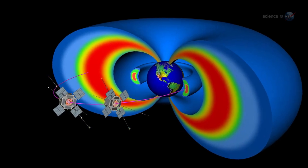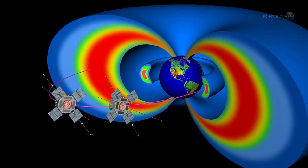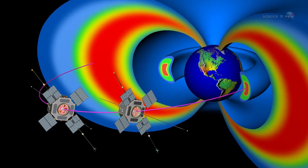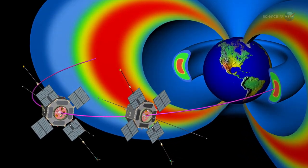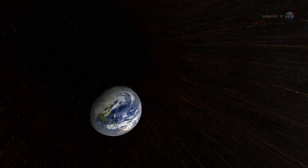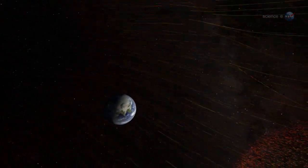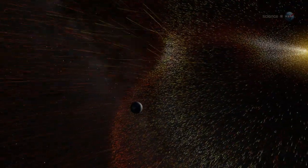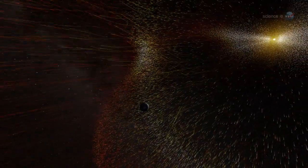Chorus emissions are front and center for the storm probe mission, says Kletzing. They are thought to be one of the most important waves for energizing the electrons that make up the outer radiation belt. In particular, Chorus might be responsible for so-called killer electrons, high-energy particles that can endanger both satellites and astronauts.